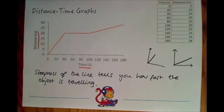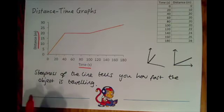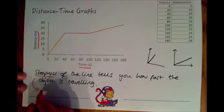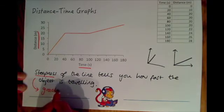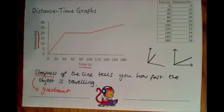You'll also see this idea of steepness in another word we call the angle of the line the gradient. So the steepness or the gradient of the line in the distance time graph tells you how fast something's travelling.